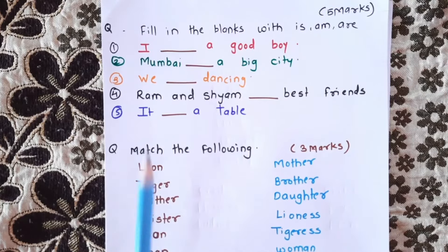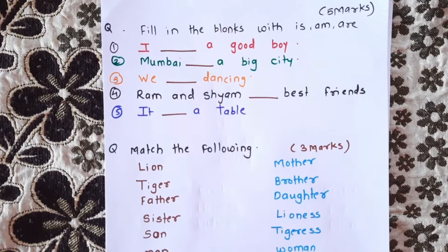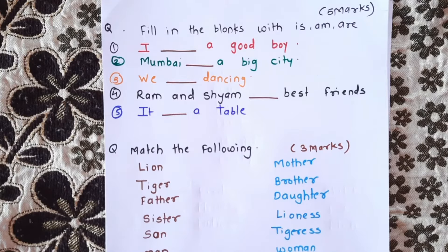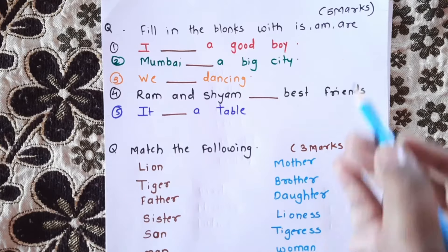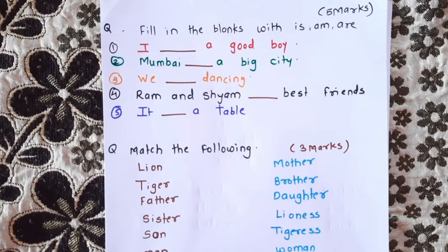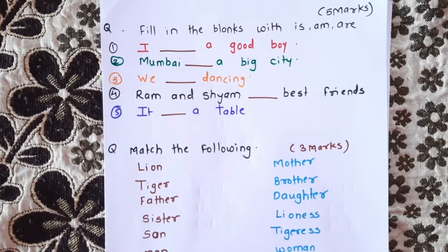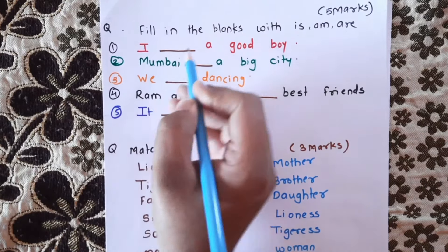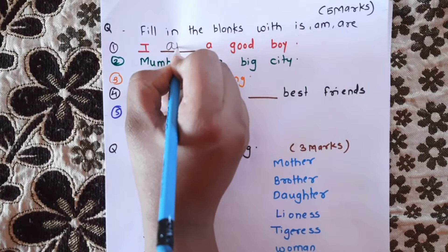The next question is: fill in the blanks with is, am, or are. To choose the right option: for 'we', 'you', 'they', and plural nouns, use 'are'. First sentence: I am a good boy — use 'am'.